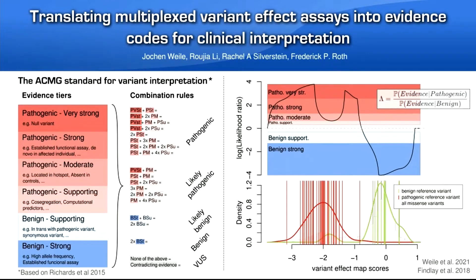In a two-step approach, we first find functions translating variant effect map scores into a log likelihood ratio (LLR) of pathogenicity. In the second step, LLRs can then be expressed in terms of the ACMG's categorical evidence codes.